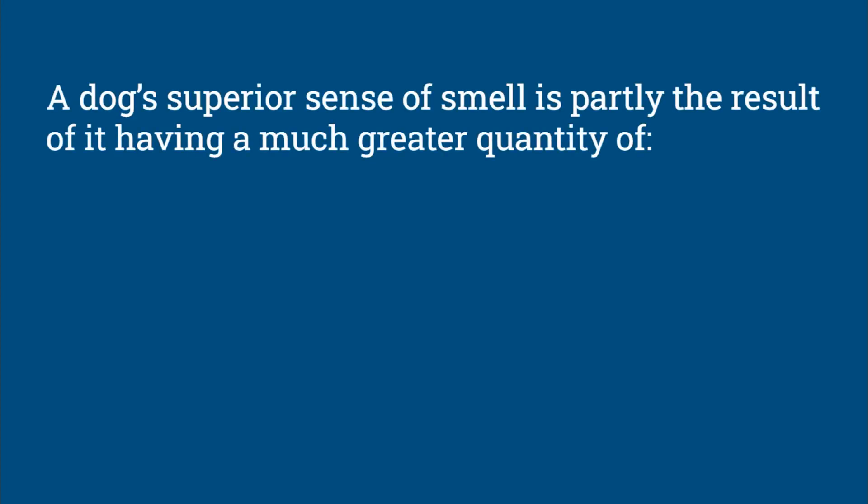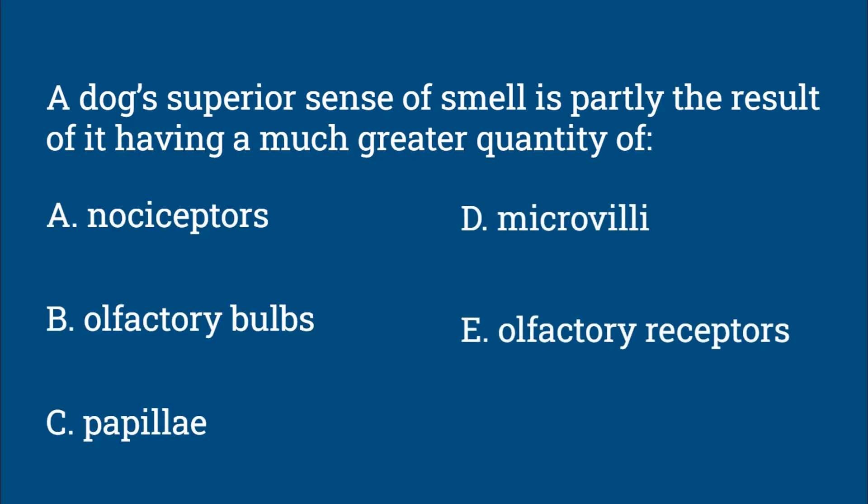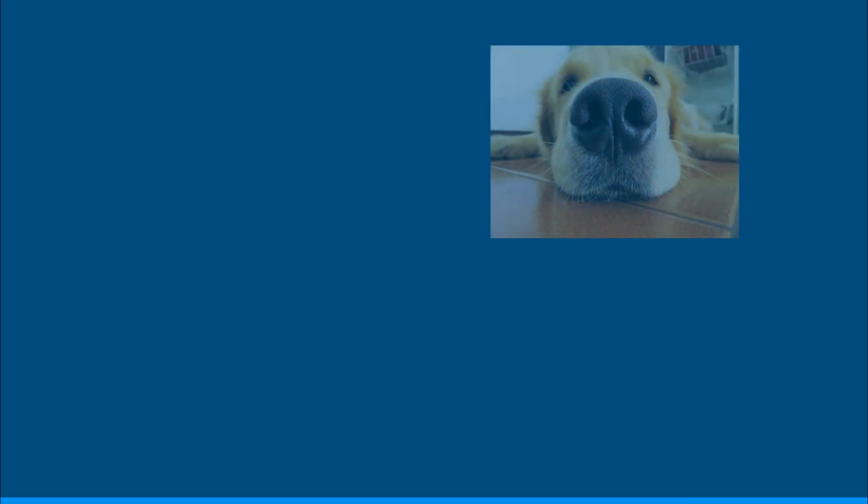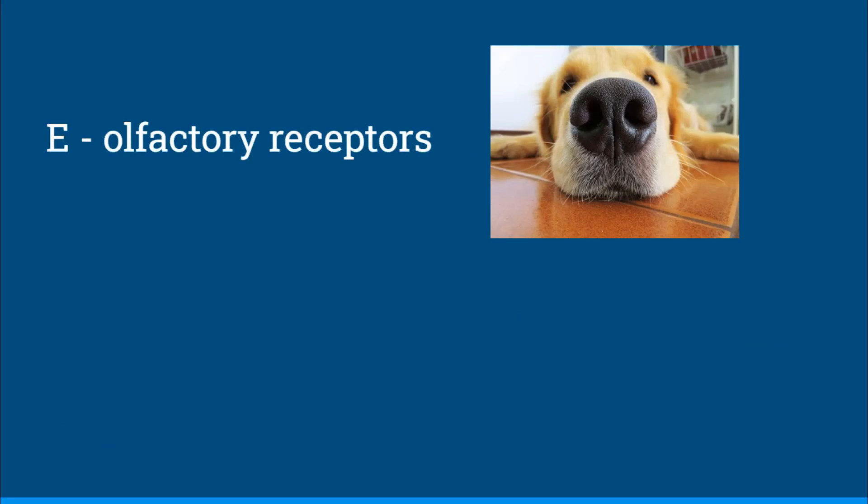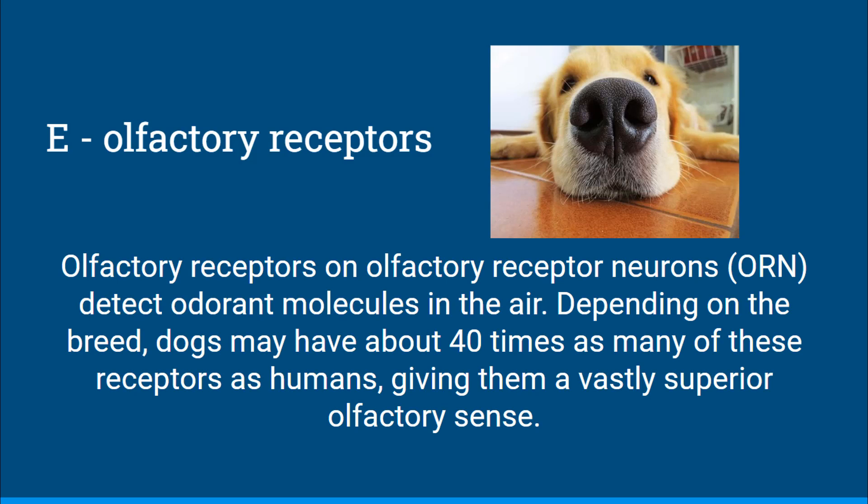A dog's superior sense of smell is partly the result of it having a much greater quantity of nociceptors, olfactory bulbs, papillae, microvilli, or olfactory receptors. The answer is E, olfactory receptors. Olfactory receptors on olfactory receptor neurons detect odorant molecules in the air. Depending on the breed, dogs may have about 40 times as many of these receptors as humans, giving them a vastly superior olfactory sense.